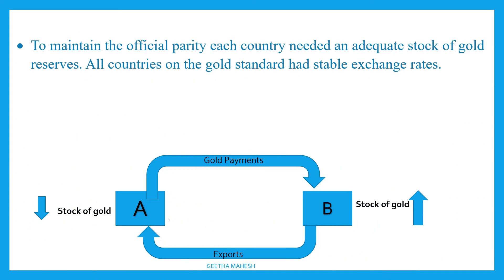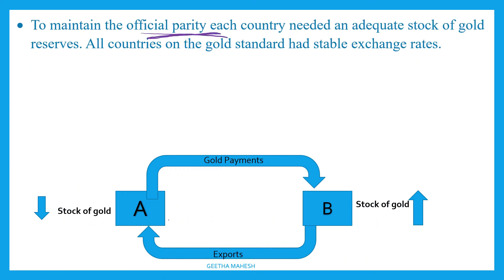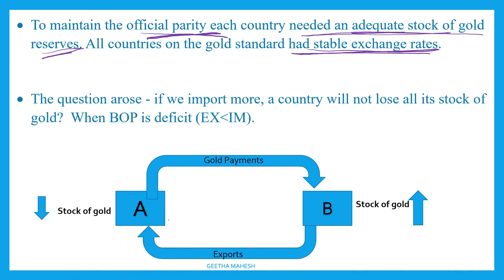To maintain official parity or equality, each country needed to maintain an adequate stock of gold reserves. All countries on the gold standard had a stable exchange rate. When all countries use gold as a medium of exchange, the exchange rate between two countries remains stable for a long period of time, as it is determined by the fixed price of gold.